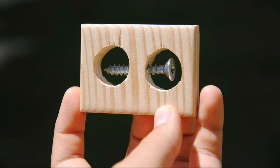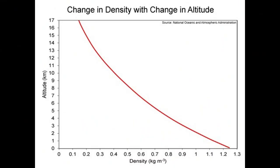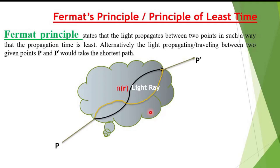Flat earthers always ask for experiments that are very hard to perform in real life. Refraction in the atmosphere takes place when there is a density gradient in the atmosphere, and it's governed by Fermat's principle. That is, that light always takes the path that takes the shortest time.